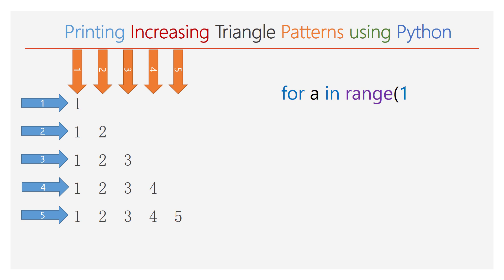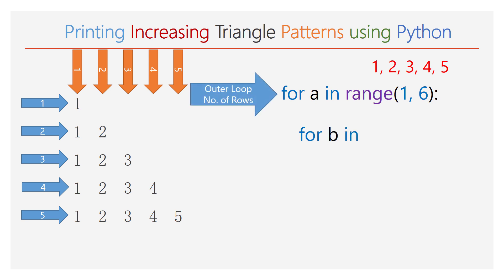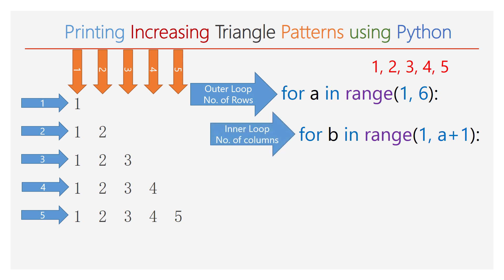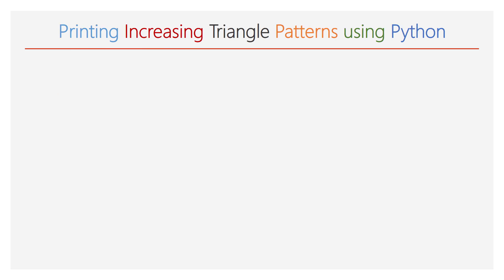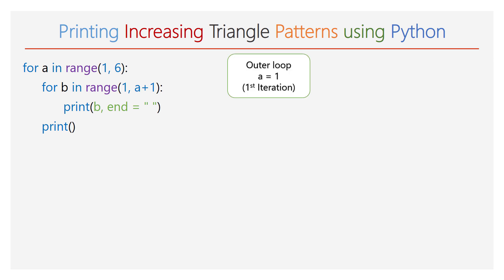Two for loops are used. The outer for loop has a range of 1 to 6 and iterates 5 times — it decides the number of rows to be printed. The inner for loop has a range of 1 to a+1, making it a function of the outer for loop. Based upon the value of the outer for loop, the inner for loop will iterate. The print function uses variable b with the end attribute as arguments, plus an empty print function to start printing characters on a new line after each inner loop completion.